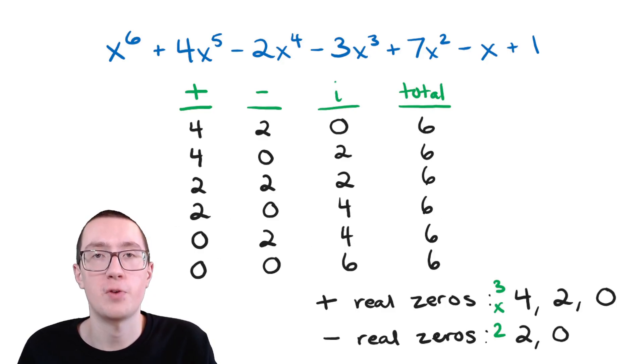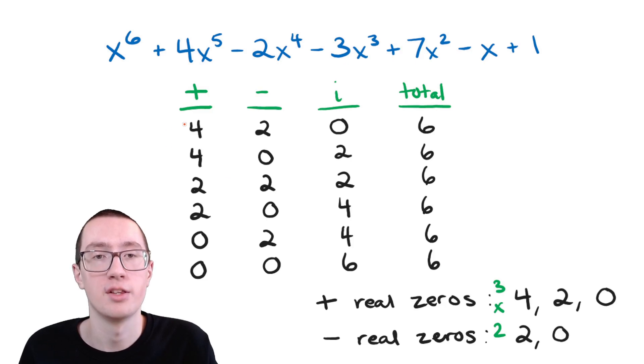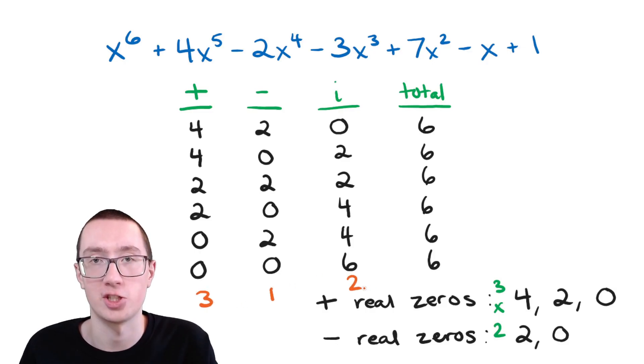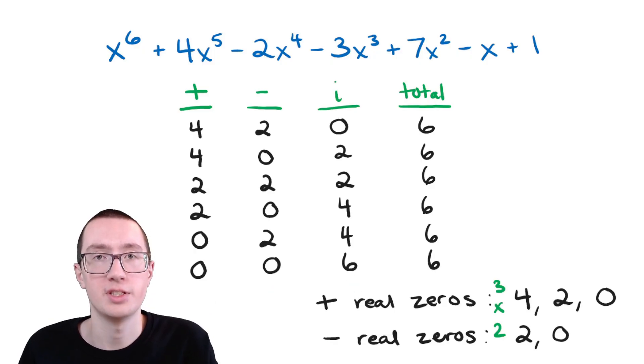If you wanted to find out which one it actually is, you would have to graph this and find all the zeros yourself. But Descartes' rule of signs is basically just a way of figuring out the different possibilities. So this tells you that, for example, you would never have three positive, one negative, and two imaginary from this equation — it's not in the list of possibilities. I hope this cleared up how to use Descartes' rule of signs. There's also something called the complex conjugates theorem you can learn about next. If you have any questions, leave a comment and I'll be sure to answer. Thanks for watching.